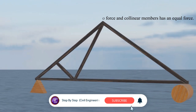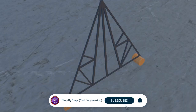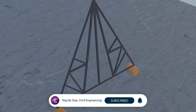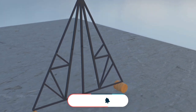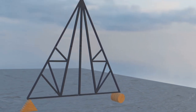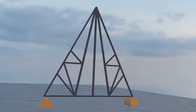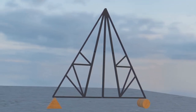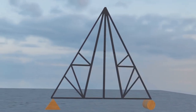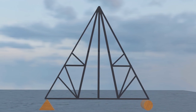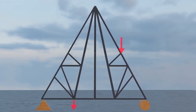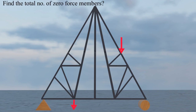Let's take another structure. This structure has many members. If asked to analyze it by the method of joint, you just have to simplify it by finding the zero force members and then analyze the remaining structure. Pause the video and try to solve it yourself — find how many members will have zero forces.